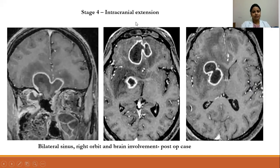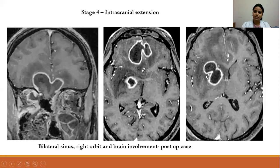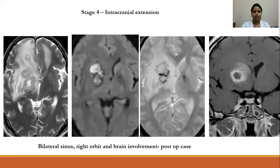Coming to Stage 4, intracranial extension: a post-op patient presented with recurrence of symptoms involving residual sinuses, with disease extending into the bifrontal region bilaterally. On post-contrast, there was peripheral enhancement of the lesion, and a similar lesion was seen in the right gangliocapsular region. This patient underwent stereotactic brain biopsy and abscess drainage, which showed fungal elements, and following the procedure there was resolution of the lesion.